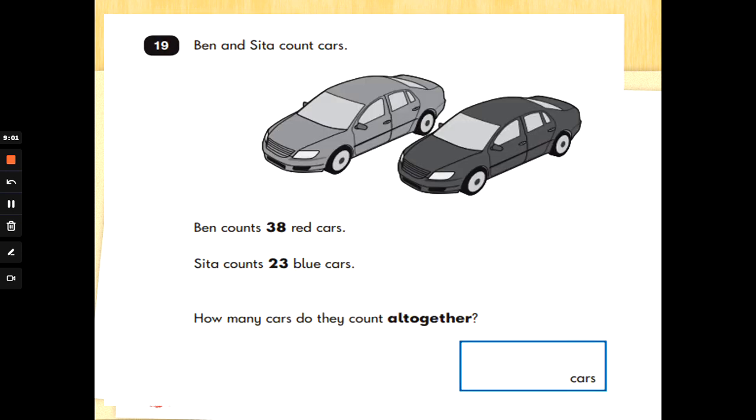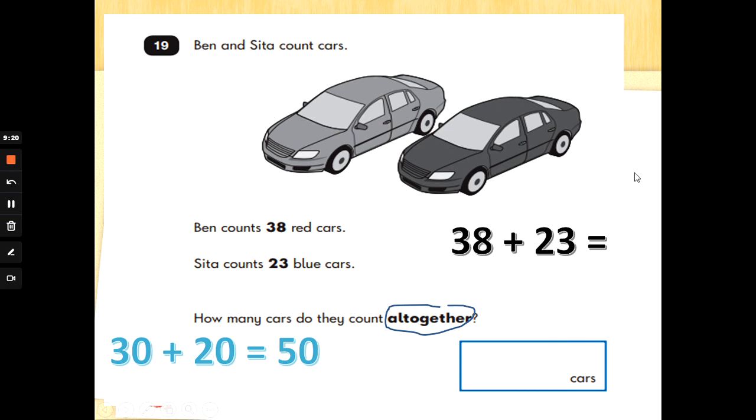Okay. Number 19. Ben and Ceta count cars. Ben counts 38 red cars. Ceta counts 23 blue cars. How many cars do they count all together? All together means add. So we need to do 38 add 23. So I would do 30 add 20 is 50. And then I would do 8 add 3 is 11. Then I need to add them together.